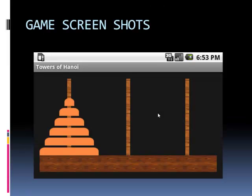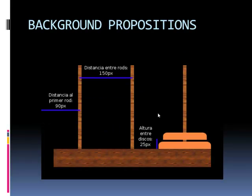The game screenshot gives the user an idea about what the output looks like. This picture is dynamically invoked in the program. The distance between the two rods is 150 pixels, the size of the larger disk visible on screen is 25 pixels, and the distance of the primary rod is 90 pixels.